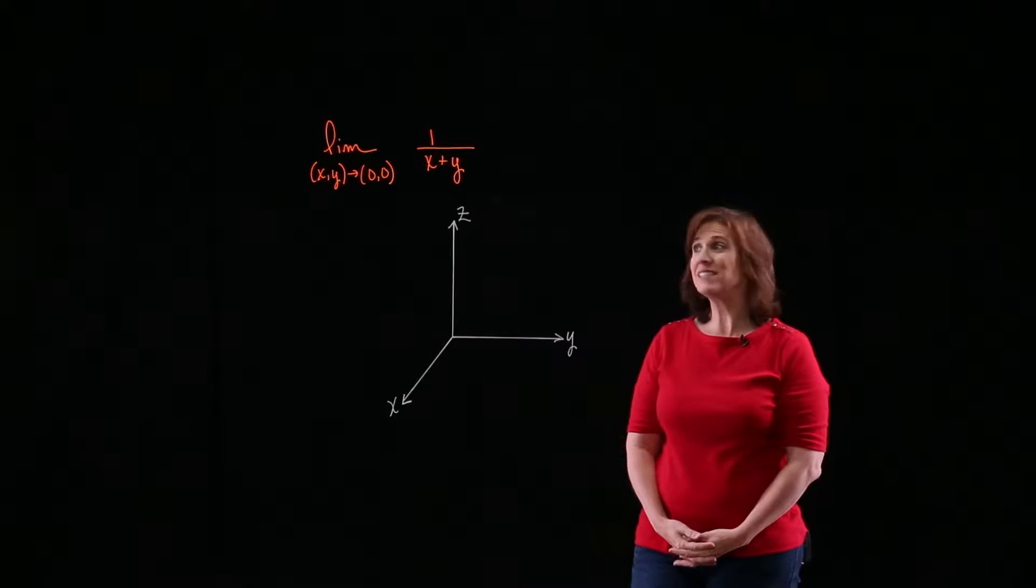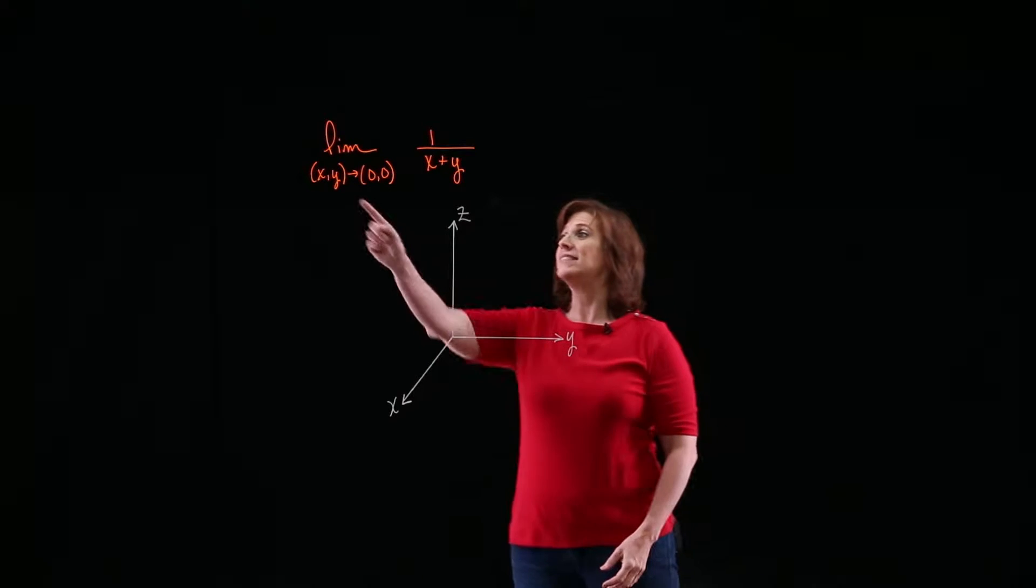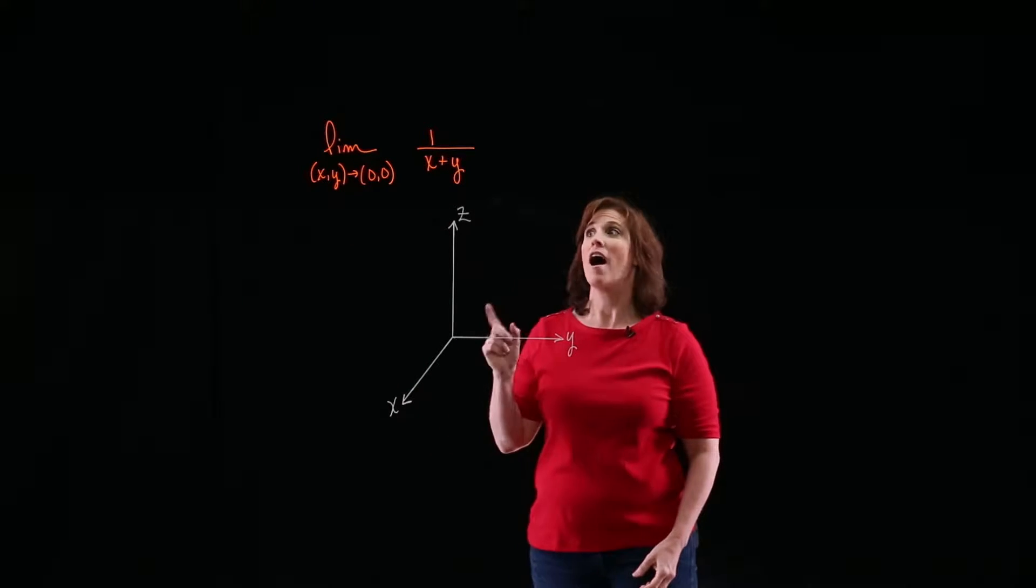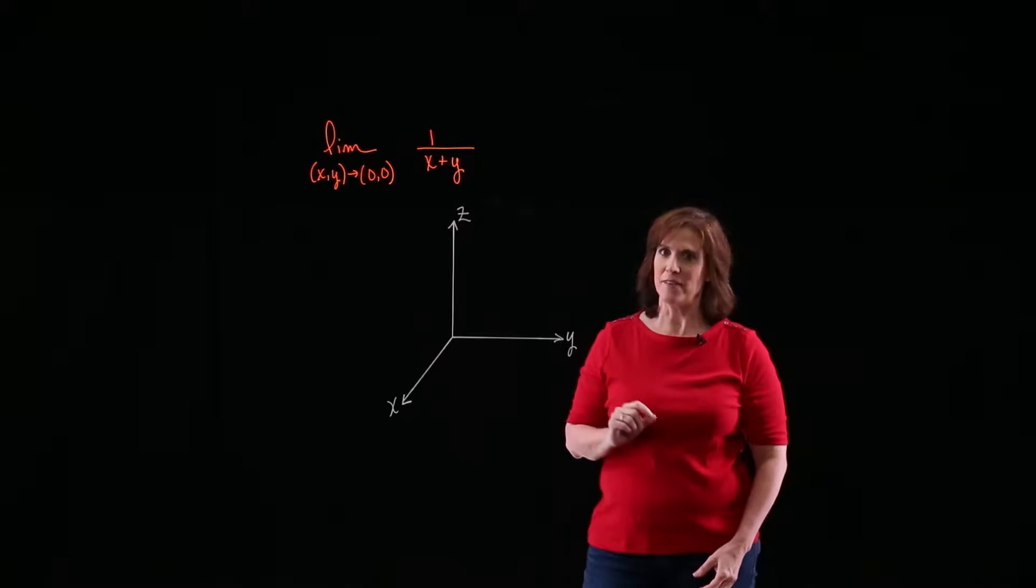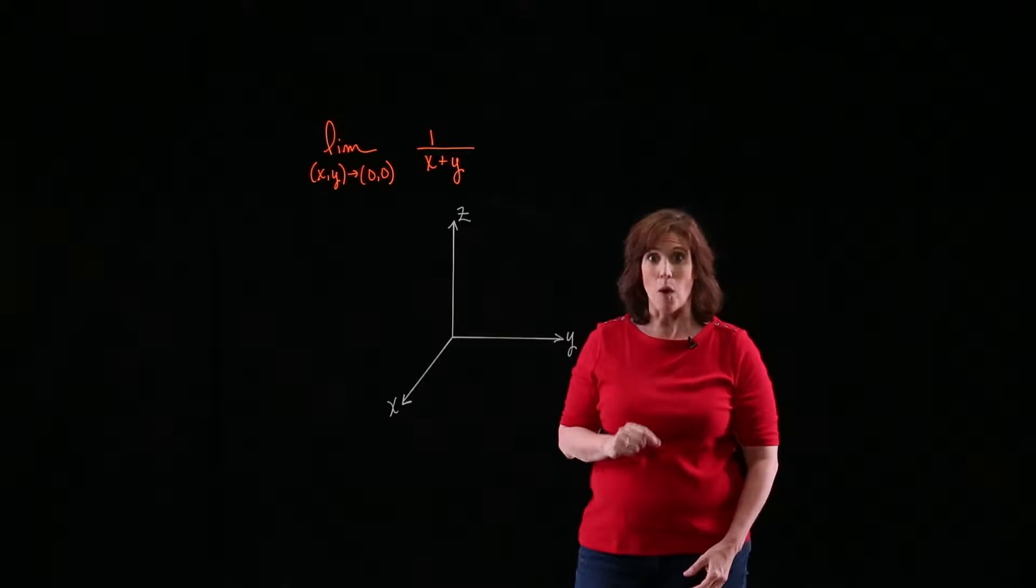Hi, everyone. I'm Cheryl. In this problem, we're asked to find the limit as (x, y) approaches (0, 0) of 1 over (x + y) if that limit exists. And if it doesn't exist, we need to explain why.